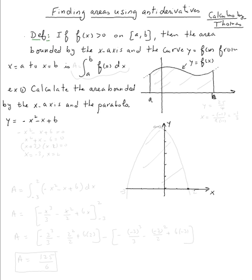If f(x) is strictly positive on [a,b], then the area bounded by the x-axis and the curve y = f(x), in this case this part, this area is equal to the integral from a to b of f(x)dx.